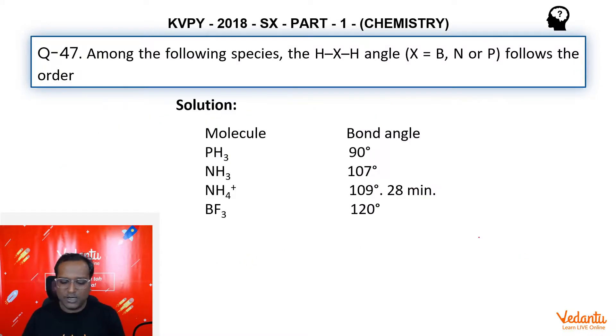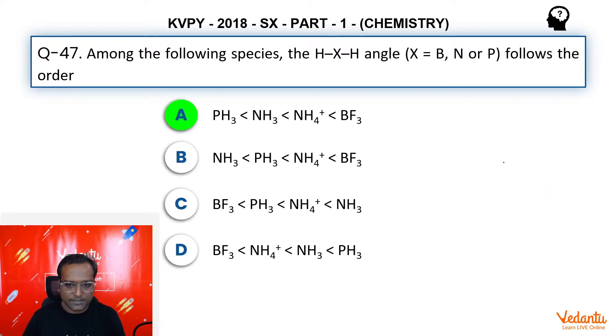So let's list these bond angles down together so that we can compare the order. So this is the data, guys. And therefore, we can say that BF3 has the largest bond angle, followed by ammonium, then ammonia, and then phosphine. Let's see which option matches. So BF3 highest, we wanted BF3 as the highest. So cancel, cancel.